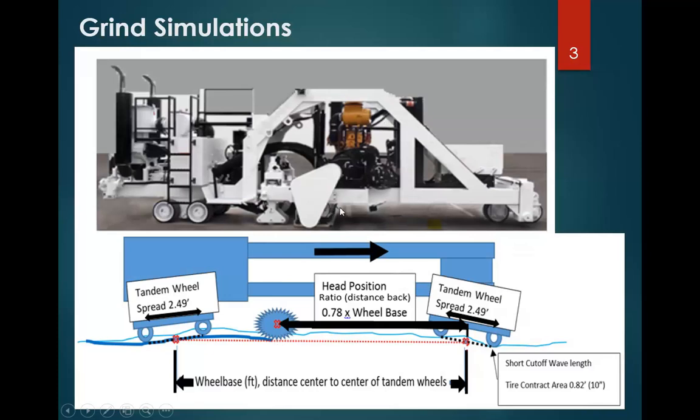These diamond grinders differ from cold planers such that they don't operate on automatics. They're just locked onto a fixed frame. A cold planer has carbide tipped teeth and they can control the elevation of the cold planer based on some averaging systems or skis or different matters. But this is a fixed frame grinder, which is essentially the way diamond grinders work at this point in time.